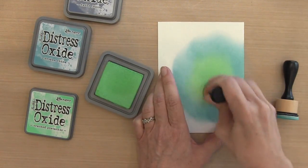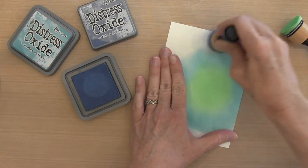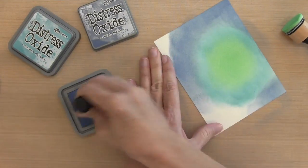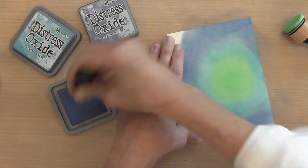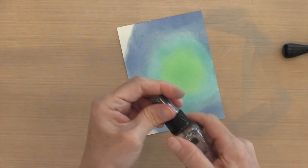I have a piece of Strathmore 90 pound watercolor paper. I like this paper because it's thinner than the 140 pound, which is sometimes too thick when you're layering and it warps. This is one of my favorites—it's not a bright white, so I usually only use it when I'm going to be covering the whole thing.